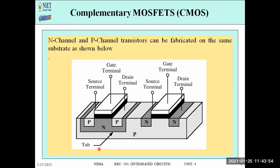In CMOS technology, we work with MOSFETs — you have already studied N-channel FET, P-channel FET, enhancement MOSFET, and depletion mode devices. In complementary MOSFETs, both N-channel and P-channel are fabricated on a single substrate. When both channels are diffused onto one substrate, the resulting circuit is our complementary MOSFET, which is CMOS. As shown in the diagram, there is one substrate containing both an N-channel and a P-channel.